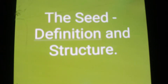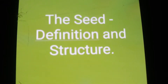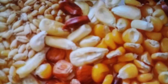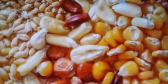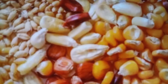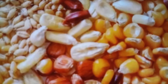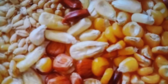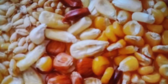In today's video we are going to see the seed — its definition and structure. When we talk about a seed, when the process of fertilization takes place, the ovary turns into the fruit and the ovules become the seeds of the fruit.